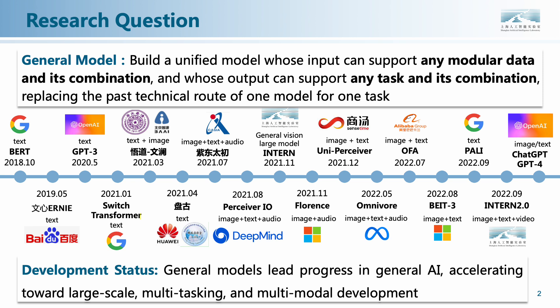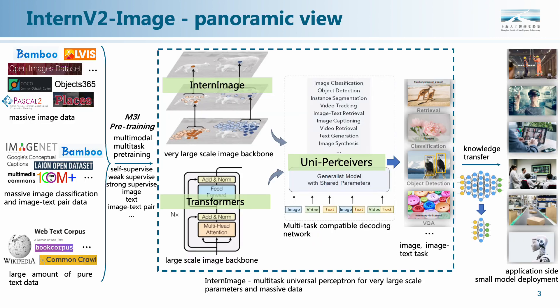Our Shanghai AI Labs generic vision technology system, InternImage, through more than one year of iteration, is now up to InternImage 2.0, which is one of the best perception models at present.